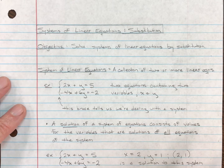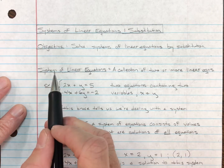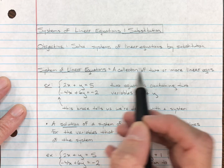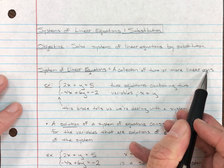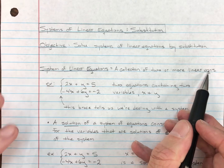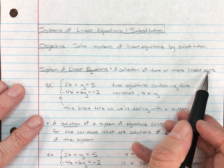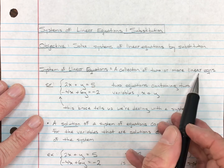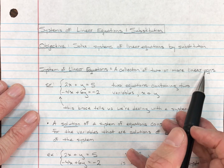What is a system of linear equations? A system of linear equations is simply a collection of two or more linear equations. We are going to focus primarily, in the next few video lectures, on a collection of only two linear equations. But you can have three, four, five, six — as many as you'd like.